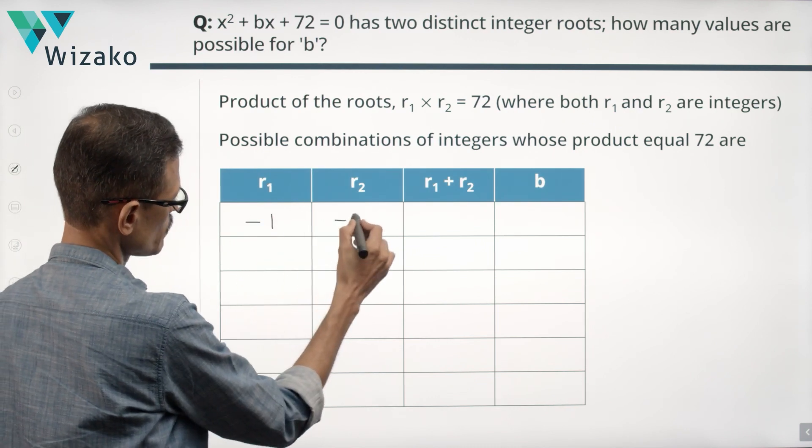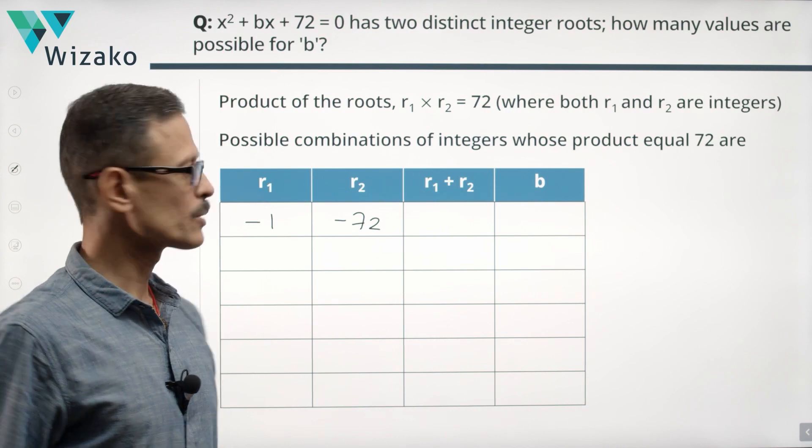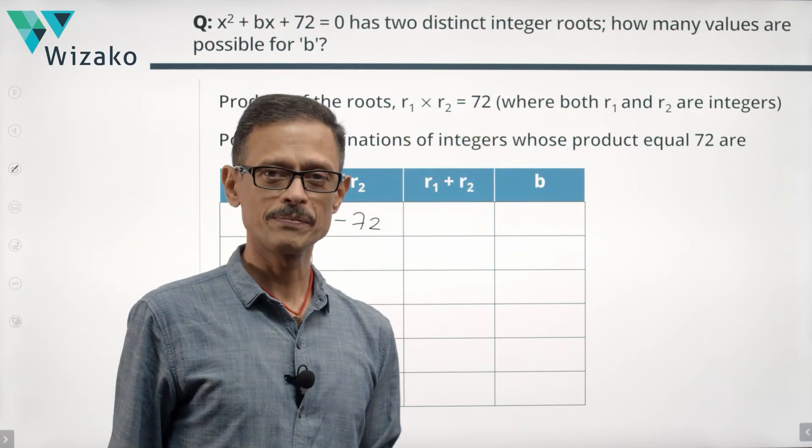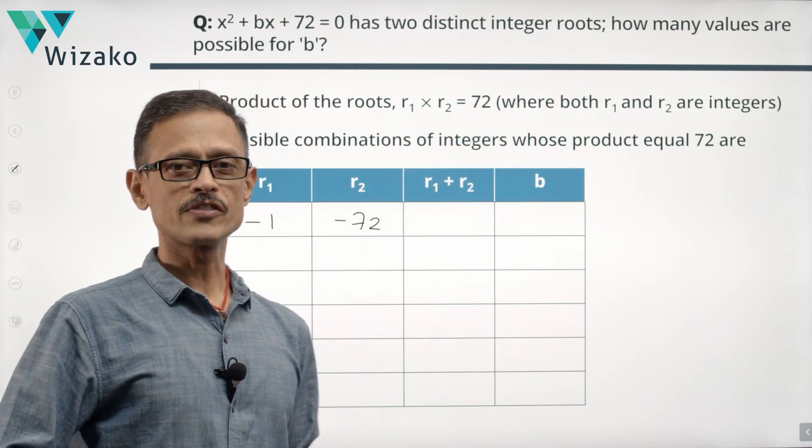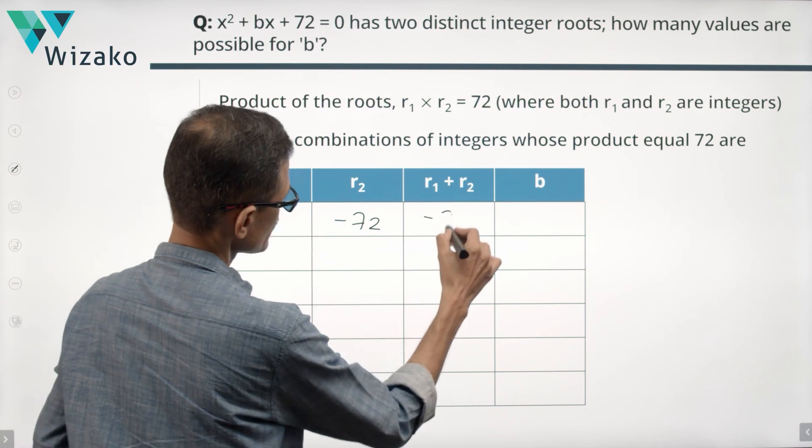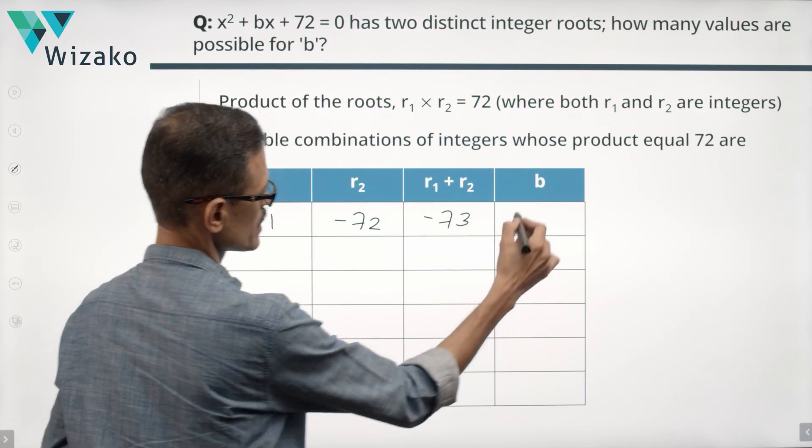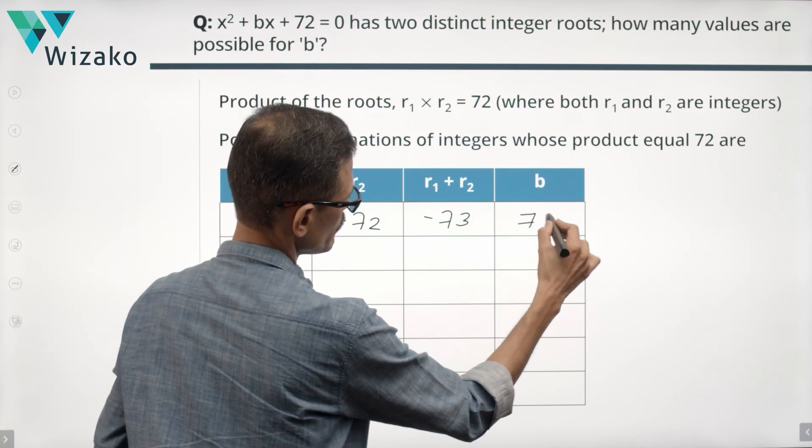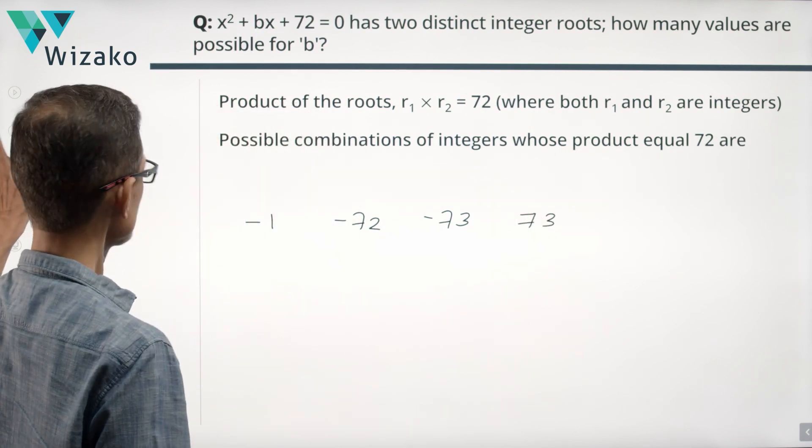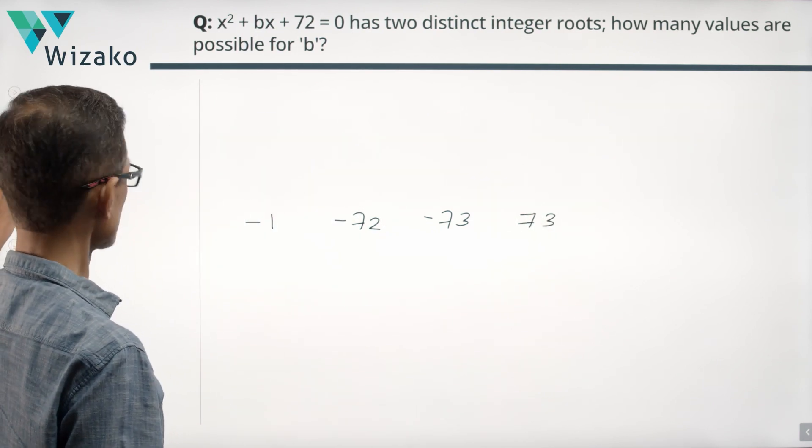Minus 1 times minus 72. The product is still going to be 72. R1 times R2 will be 72. Let's check out whether B gives a different value now. Sum is equal to minus 73. B is negative of this, which makes it as minus of minus 73, which is plus 73. Let's go back to the previous slide. These were the values we had. Minus 73, minus 38, minus 27.